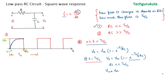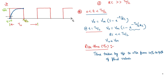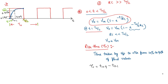We define an important term: rise time (τr), which is the time taken by the output to rise from 10% to 90% of the final value. The final value is Vm. So, 10% of Vm occurs at time t0.1, and 90% of Vm occurs at time t0.9. Rise time is defined as τr = t0.9 − t0.1. Based on the output voltage equation, we can compute t0.9 and t0.1.